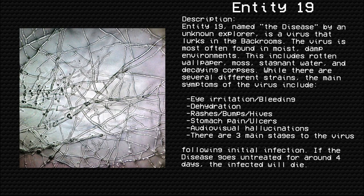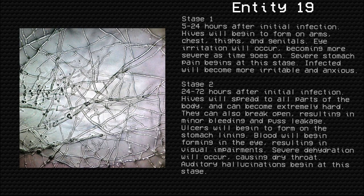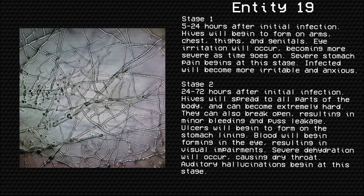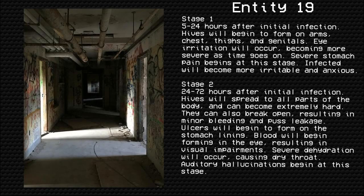There are three main stages to the virus following initial infection. If the disease goes untreated for around four days, the infected will die. Stage 1: 5 to 24 hours after initial infection. Hives will begin to form on arms, chest, thighs, and genitals. Eye irritation will occur, becoming more severe as time goes on. Severe stomach pain begins at this stage. Infected will become more irritable and anxious.